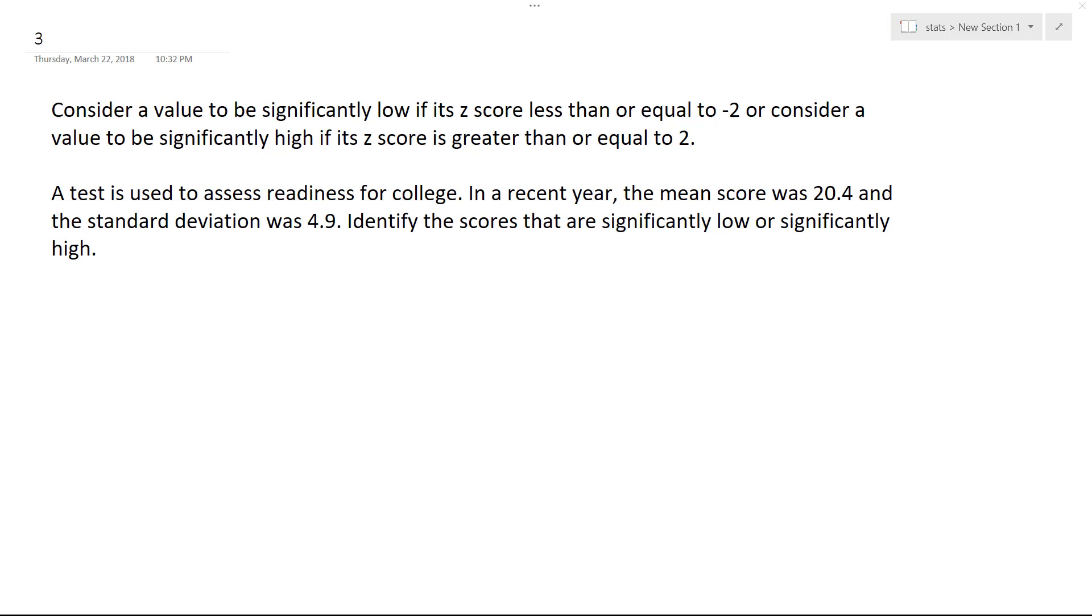We want to identify the scores that are significantly low or significantly high, the threshold for it. So what we do for that is we're going to use this equation. There it is. We have our mean, we have our standard deviation, and we have our z-score.